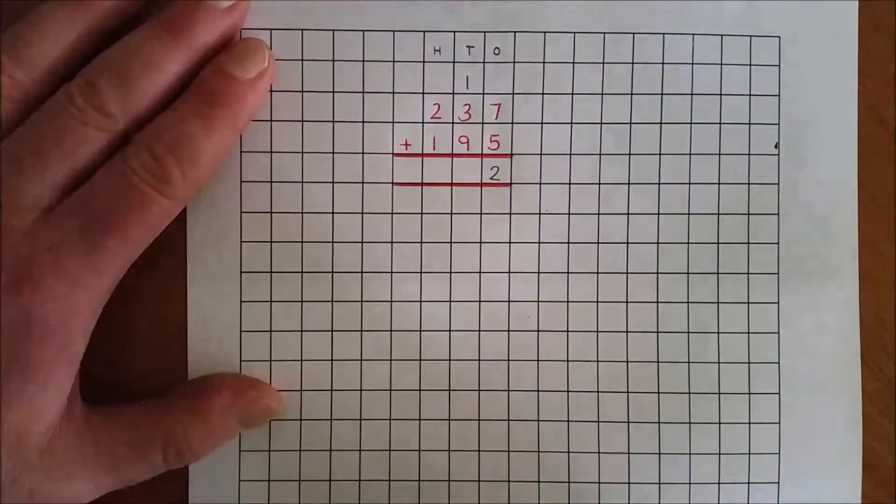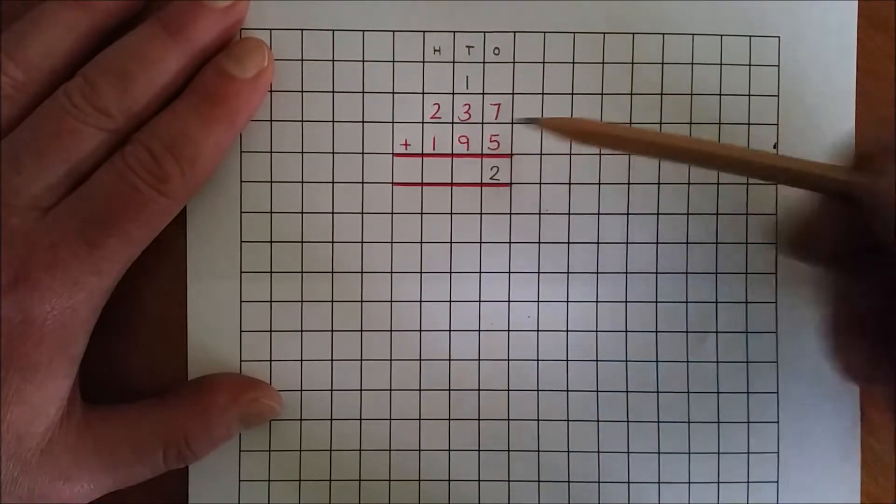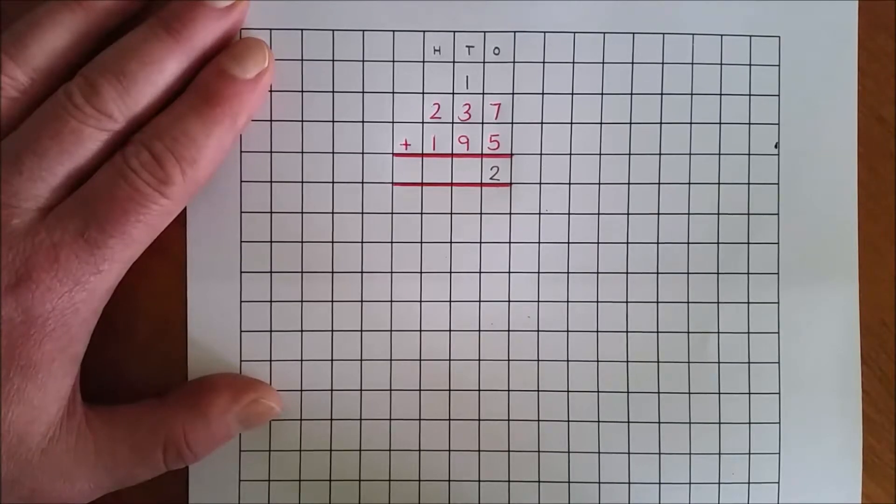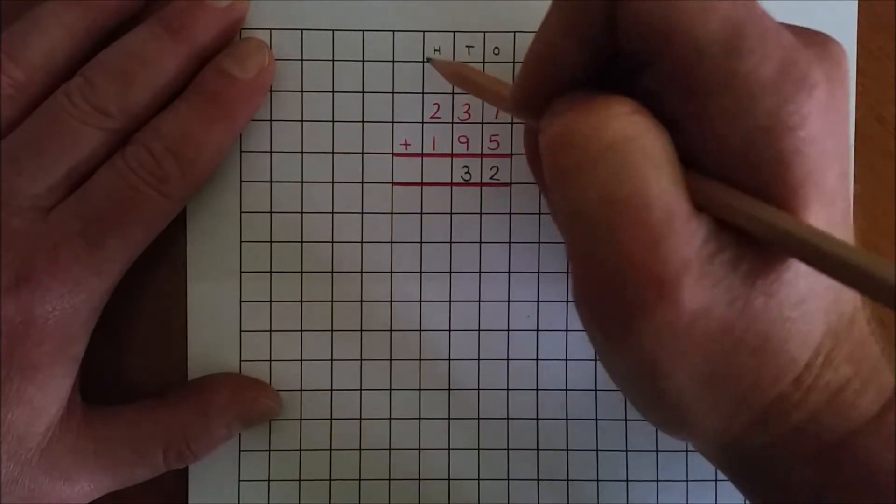Add the tens. 1 ten and 3 tens and 9 tens is 13 tens. Rename 13 tens as 3 tens and 100.